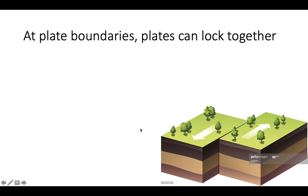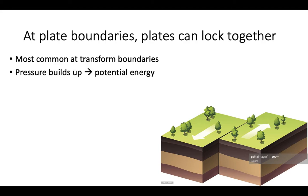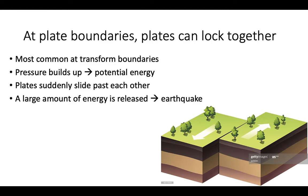All right, so at a plate boundary, specifically at a transform plate boundary, these plates can lock together. They're sliding past each other, but if friction builds up, if they get locked together, they will start to build up pressure and build up potential energy over time. But eventually they're going to suddenly unlock, and they're going to slide past each other really rapidly. And this rapid release of energy is an earthquake.